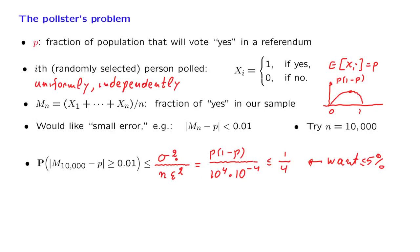How are you going to proceed? Well, you have this quantity here, this upper bound, which we know to be less than or equal to 1 fourth divided by n times epsilon squared, which is in our case 10 to the minus 4. We would like this quantity to be less than or equal to 5%, which is 5 over 10 to the second power.